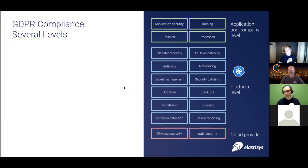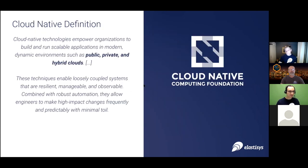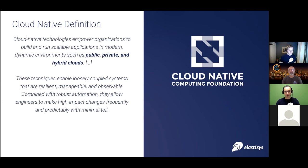Let's reiterate the cloud-native definition: 'Cloud-native technologies empower organizations to build and run scalable applications in modern dynamic environments such as public, private, and hybrid cloud. These technologies enable loosely coupled systems that are resilient, manageable, and observable. Combined with robust automation, they allow engineers to make high-impact changes frequently and predictably with minimum toil.' The key highlighted words are public, private, and hybrid clouds. Although we tend to think of Kubernetes as a managed service running on one of the hyperscalers, cloud-native technologies are actually very much intended and usable on any kind of cloud, including European ones.